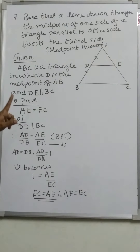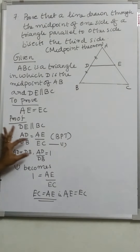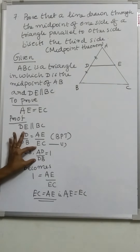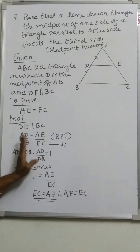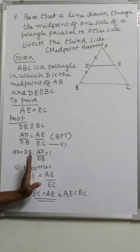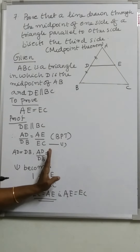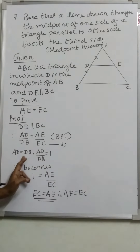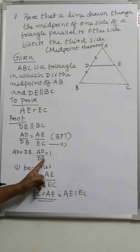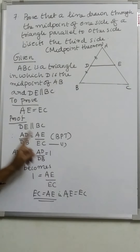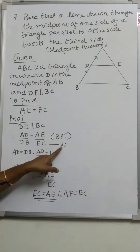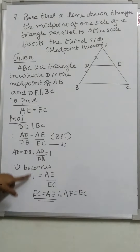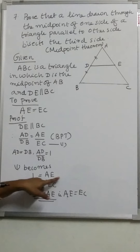D is the midpoint of AB. Therefore, AD is equal to DB. That means AD by DB is equal to 1. Substituting into equation 1, the left-hand side becomes 1, so 1 is equal to AE by EC.